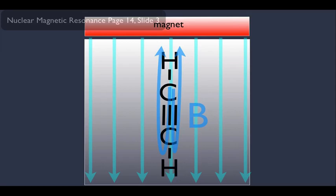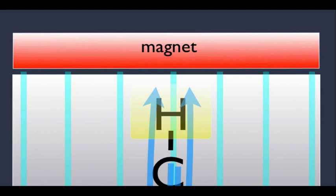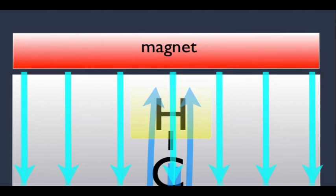Notice, focus on this top hydrogen here in the yellow box. When we get a close-up view of it, notice the B field created by the electrons is moving in the opposite direction of the applied magnetic field. So for this case, we don't expect the B effective to be as high as in the other two examples.